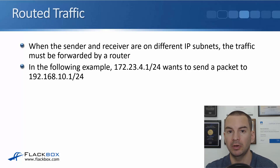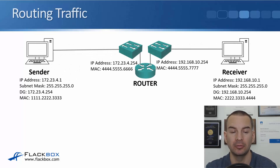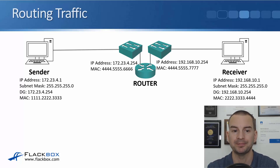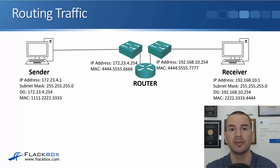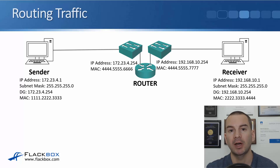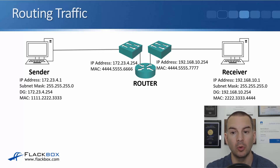In the example, 172.23.4.1 wants to send a packet to 192.168.10.1 — two different IP subnets. The sender is on the left, the receiver is on the right, and there's a router routing traffic between those two subnets. If the sender sends out a normal ARP request for 192.168.10.1, that goes out as a Layer 2 broadcast and wouldn't be forwarded by the router, so the ARP request would never reach the receiver.